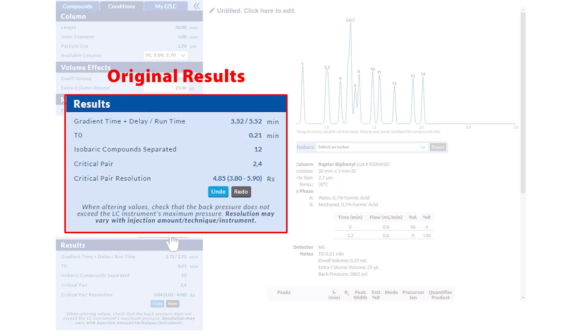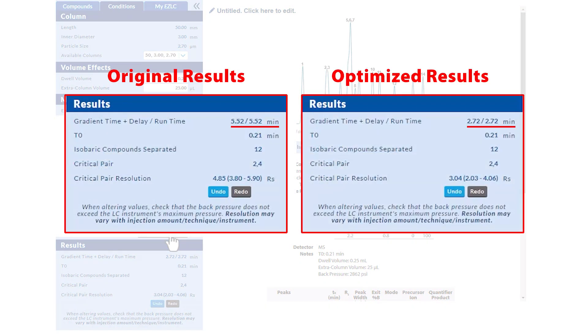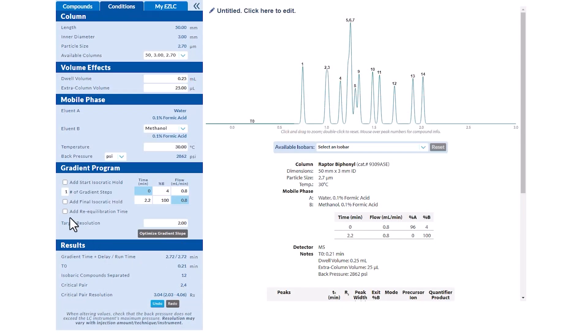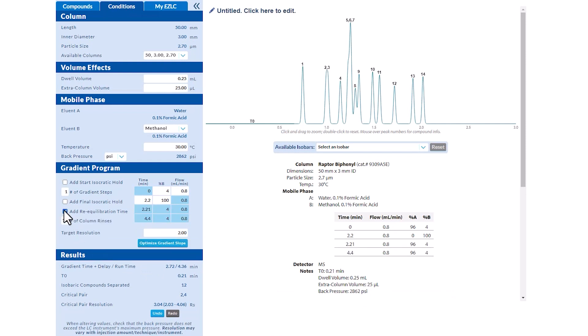Thanks to our optimizations, we've shortened our runtime by almost three minutes and we did it in seconds without using an instrument. Finally, we can add a re-equilibration step which will get the column back to the starting conditions for the next run.